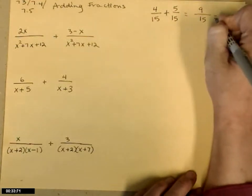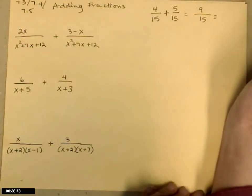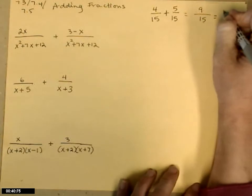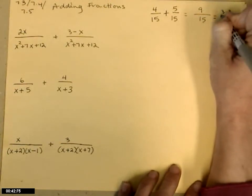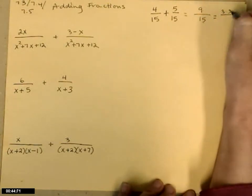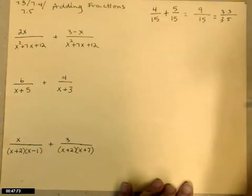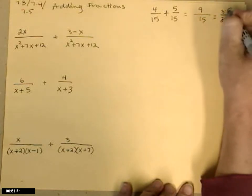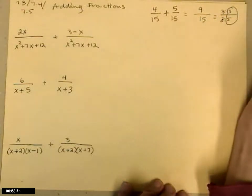After you've added, now it's okay to reduce. Now we're going to look for common factors. 3 goes into 9 and 3 goes into 15. 9 is 3 times 3, 15 is 3 times 5. There are those common threes, and so the answer is three-fifths.